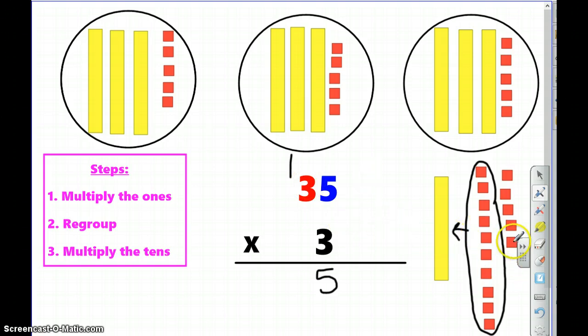So, I'm done with my ones. Now, I'm going to move on. And I've regrouped. So, now I'm going to move on to step three, which is to multiply the tens. I know that three times three is nine. But I can't forget to add this extra 10. Because we've regrouped. So, three times three is nine plus one is ten. And since there's nothing else left to multiply, all I have to do is write down ten. And I see that I have 105 as my product.